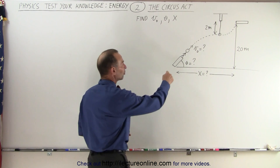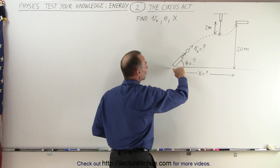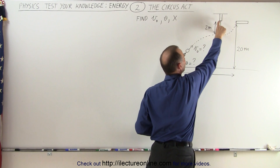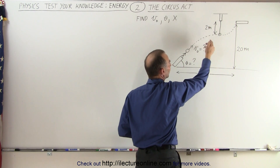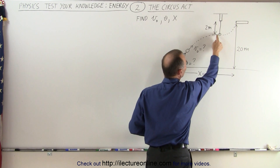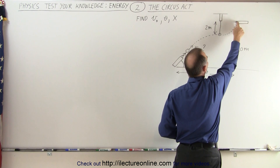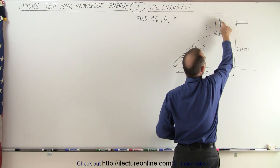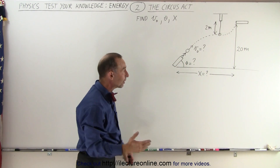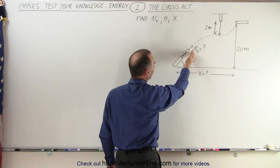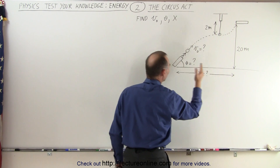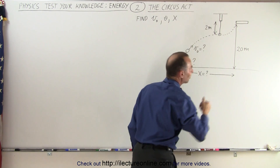The objective is to shoot a person out of a cannon at some initial velocity, have the person fly through the air, catch the bottom of this ring that's at the bottom of a two-meter long rope which is attached to the ceiling. The momentum of the person shot out of the cannon should be sufficient to swing the person to the top of the ramp right here, which is even with the top of the rope, at a height of 20 meters above the ground. They're asking you to figure out the initial velocity, the angle of the cannon, and the distance from where the cannon is placed to where the ramp is.